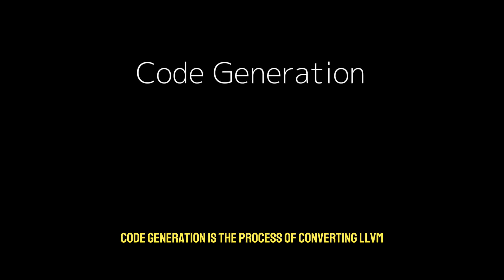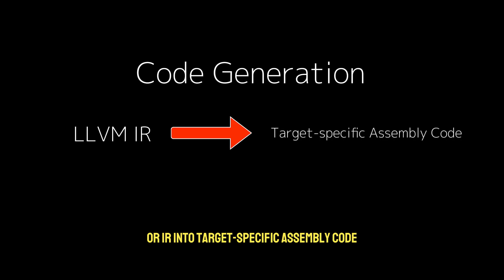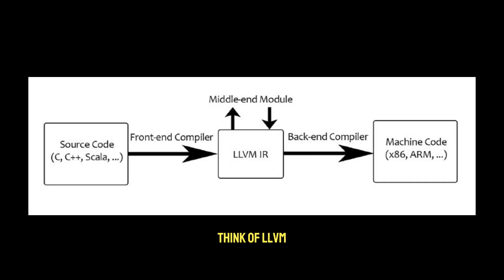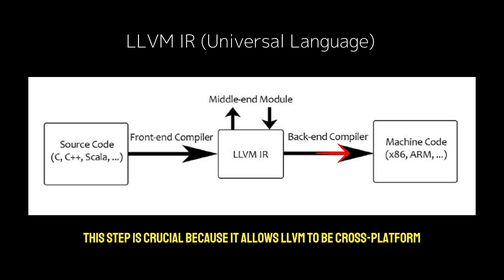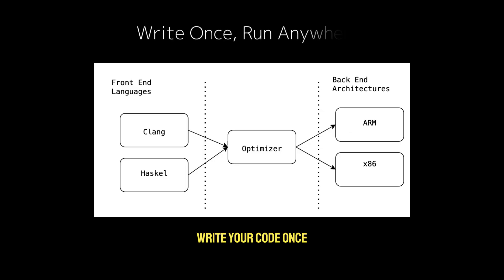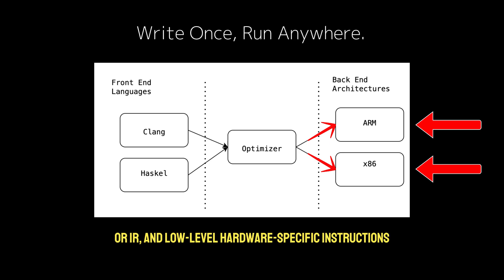Code generation is the process of converting LLVM intermediate representation, or IR, into target-specific assembly code. Think of LLVM IR as a universal language that needs to be translated into platform-specific machine instructions. This step is crucial because it allows LLVM to be cross-platform — write your code once and the backend does the heavy lifting to target x86, ARM, or RISC-V. One pipeline, multiple targets.